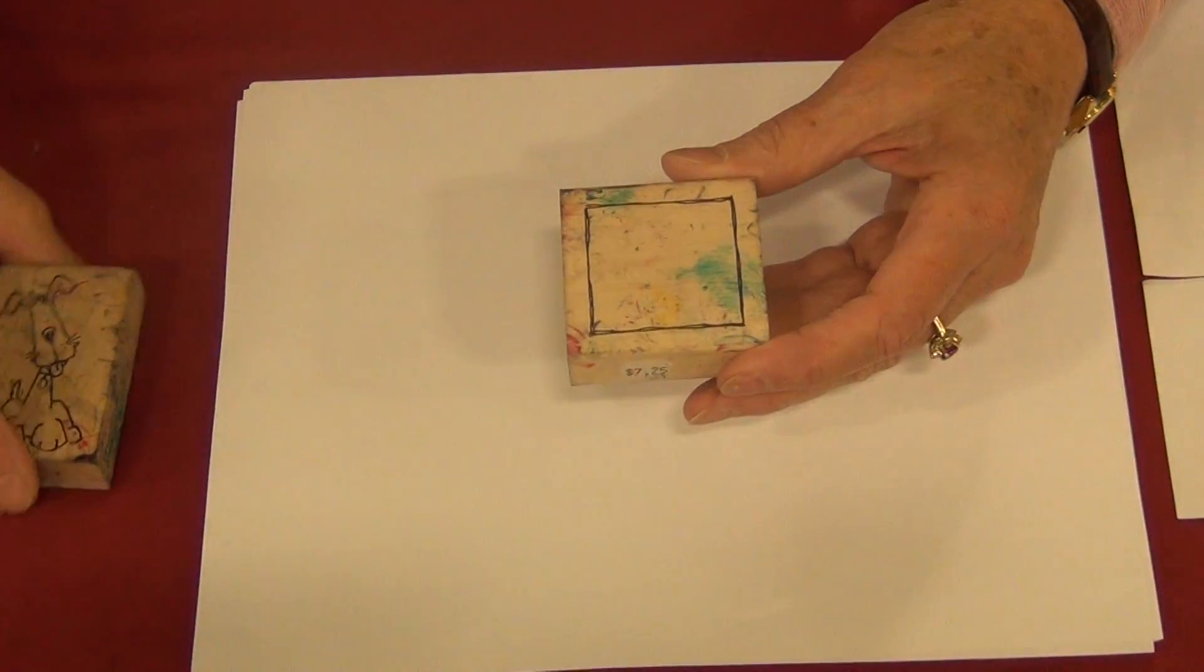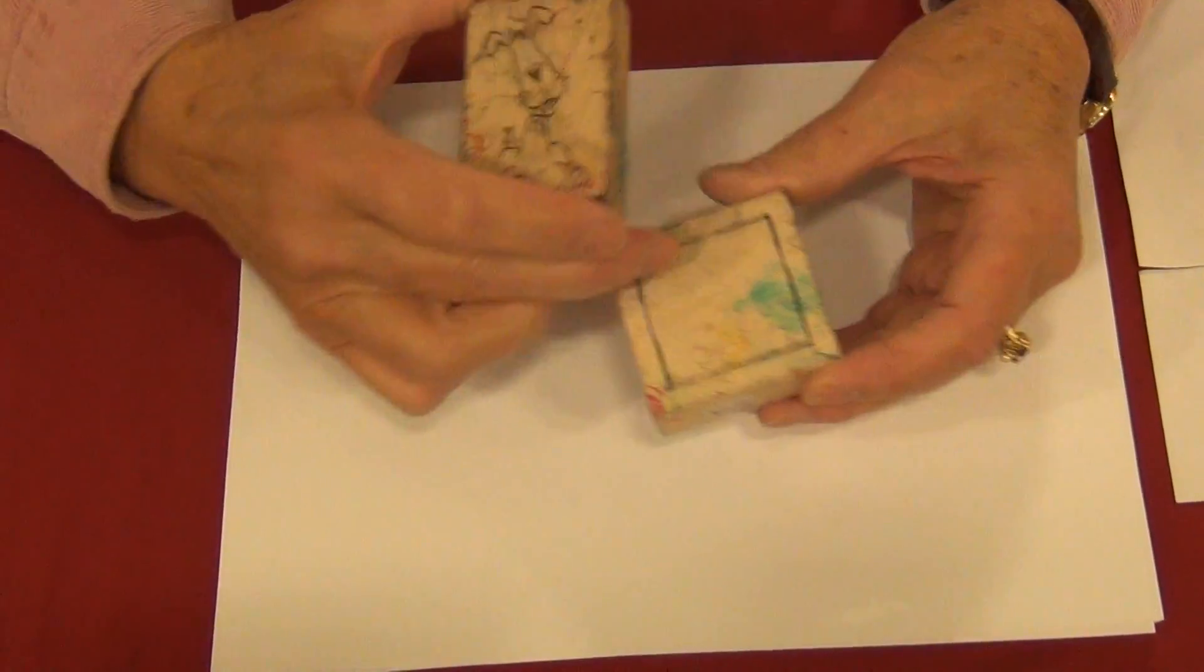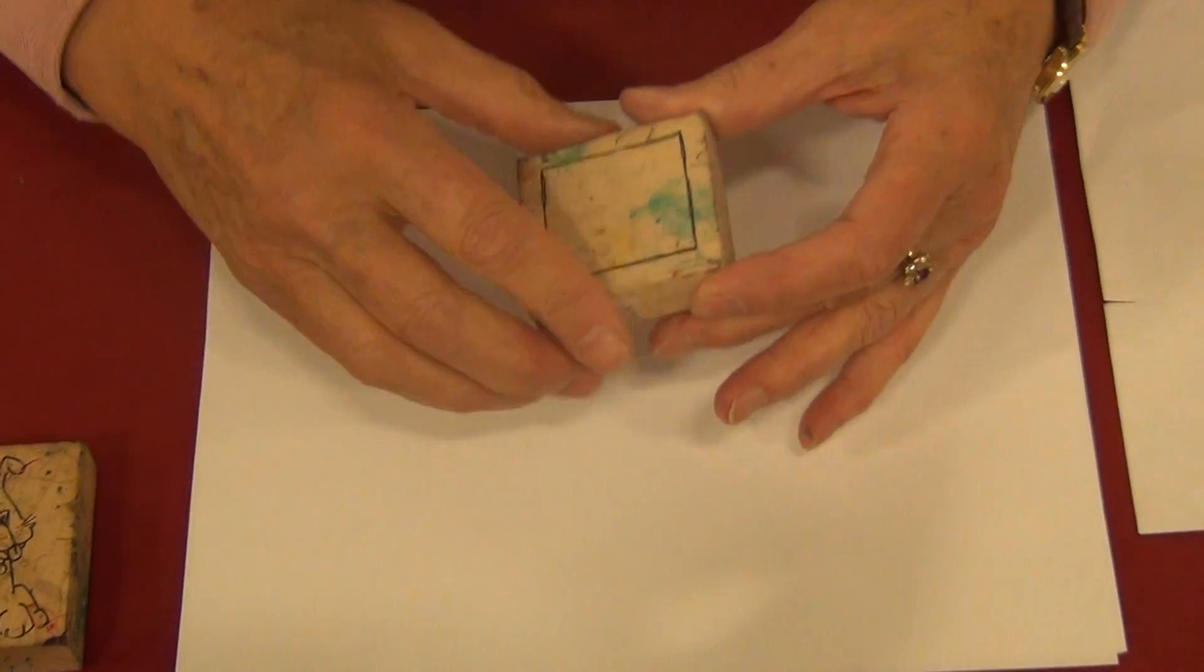A lot of people have asked how do you get a stamped image inside a square without having it overlap the square lines, and I will show you how to do that.